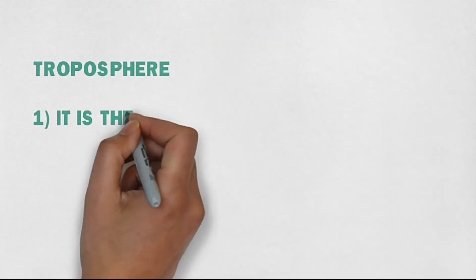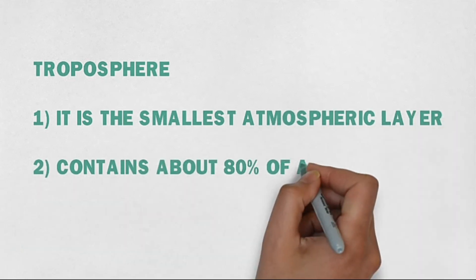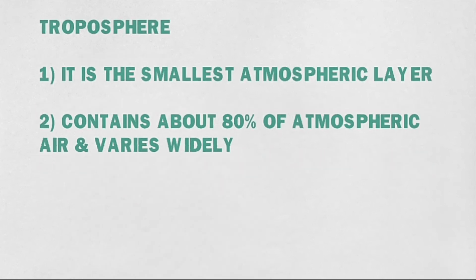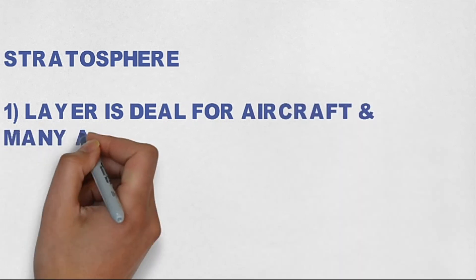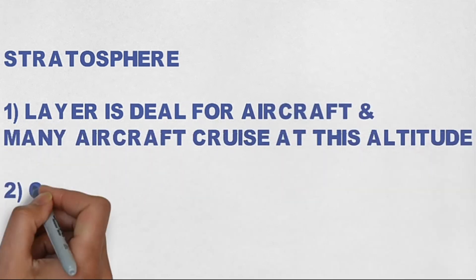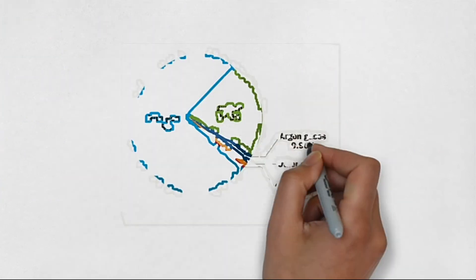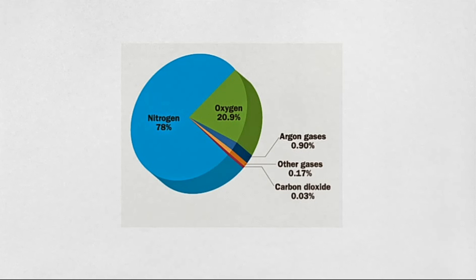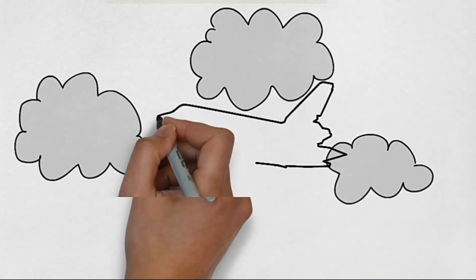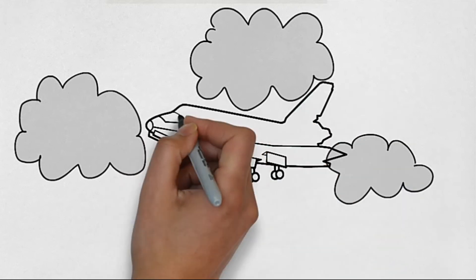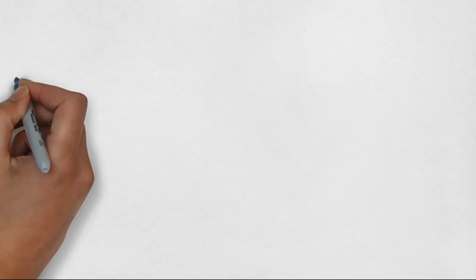The troposphere is the smallest atmospheric layer and contains about 80% of atmospheric air. The stratosphere is ideal for aircraft as there is very little turbulent air; it contains 10% of total air. The total air composition is 78% nitrogen, 21% oxygen, and 1% other gases. Aircraft fly in the troposphere and stratosphere, from mean sea level to 45,000 feet. Above 45,000 feet, air becomes less dense and engines are unable to generate the required power.